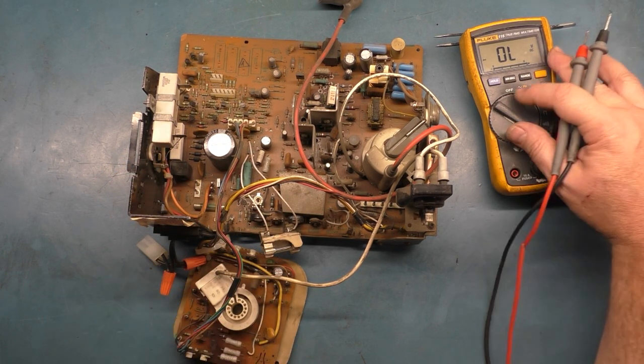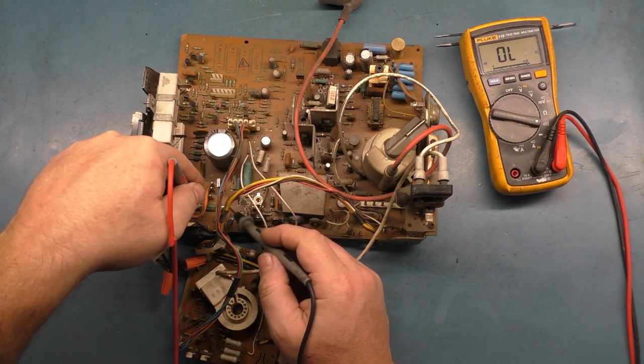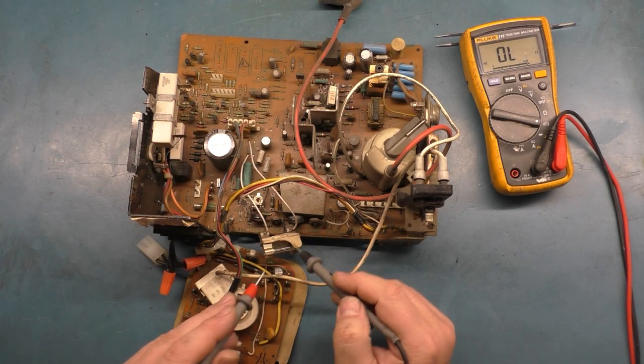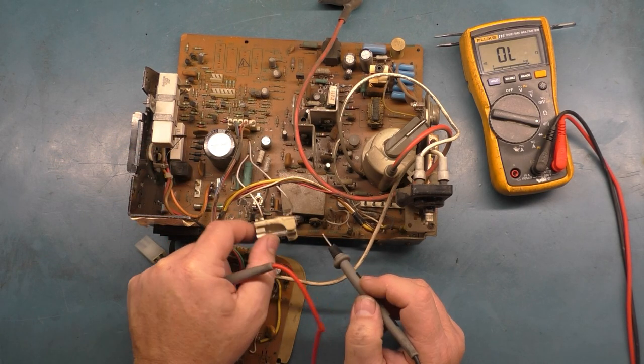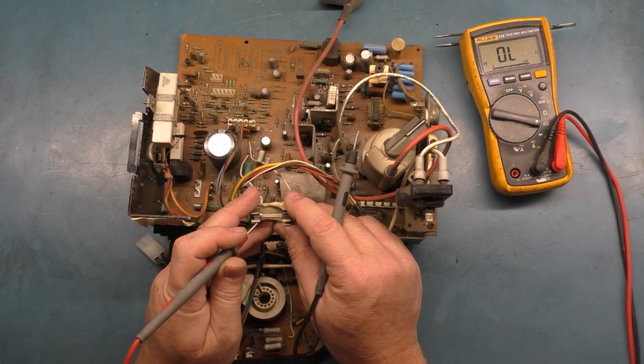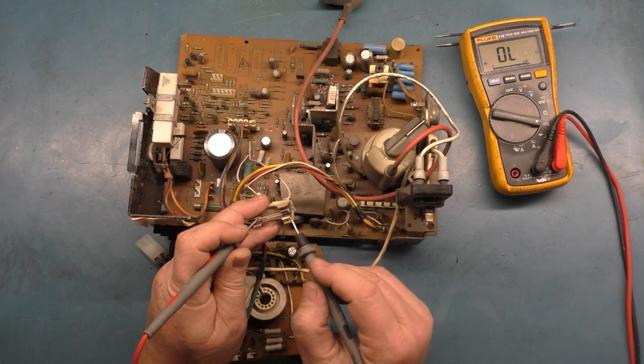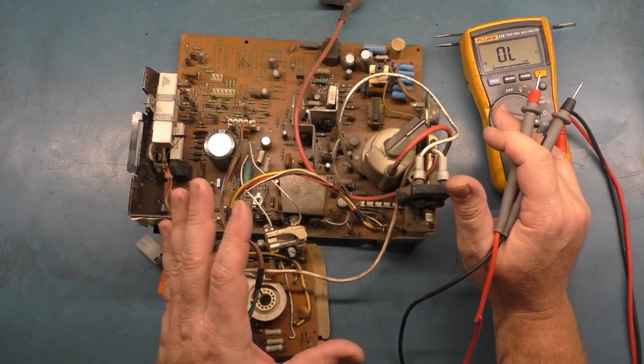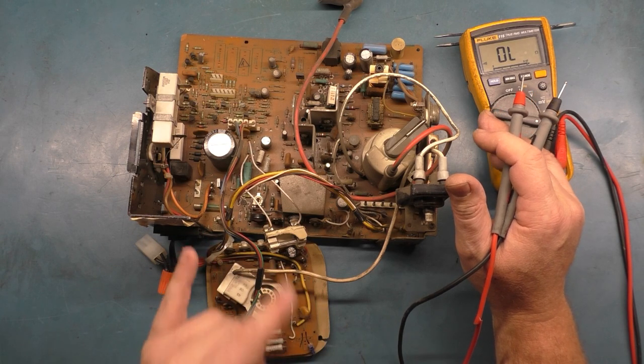The first thing you'd suspect is one of the two fuses is bad. If we check F902, the main input fuse, it's good. F901, which is the fuse that goes off the flyback with a little remote installation here, it's the correct rating and type, and it's good as well. So what could be bad that will cause the chassis to be totally dead but not have a blown fuse?